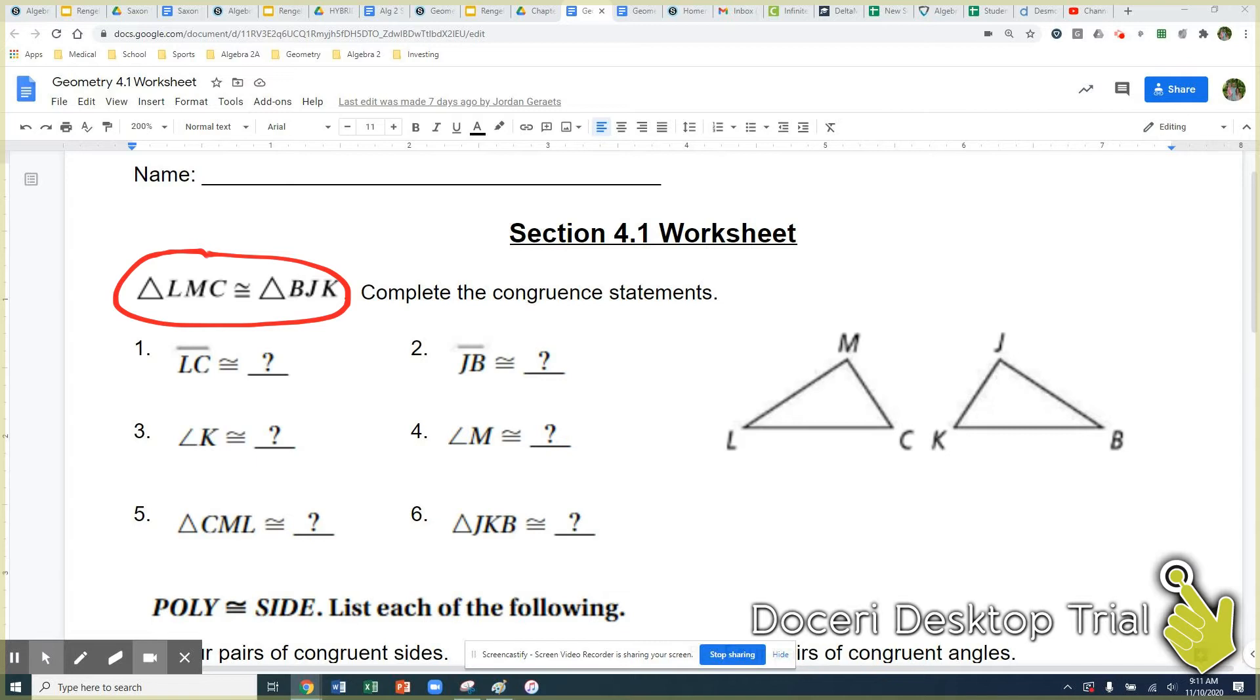That's really not the case and in section two we'll see here just a second you really only need to know three different parts. If three different parts are congruent then you can prove the two triangles are congruent.